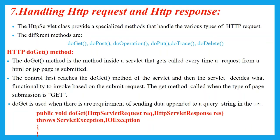The DoGet is used when there is a requirement of sending data appended to a query string in the URL. The DoGet method is used to send information appended as a query string. Get puts the form values into the URL string and is limited to about 256 characters, which creates visibility in URLs.